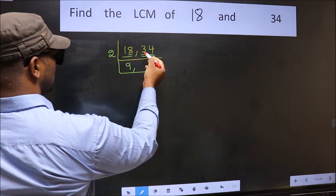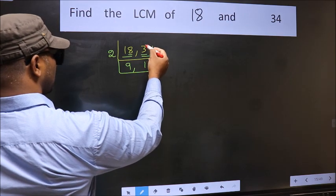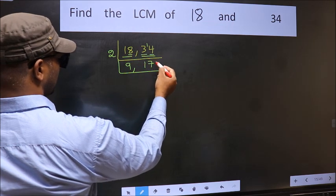First number 3, a number close to 3 in the 2 table is 2 ones, 2. 3 minus 2, 1, 1 carried forward, 14. When do we get 14 in the 2 table? 2 sevens, 14.